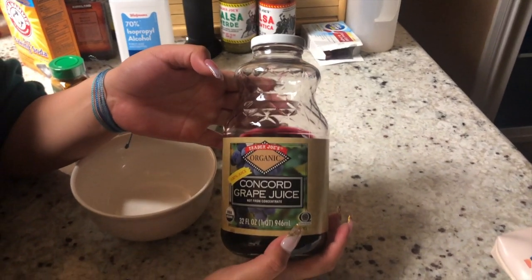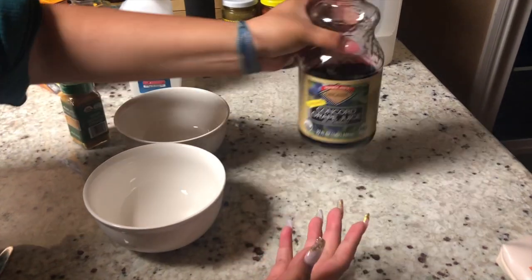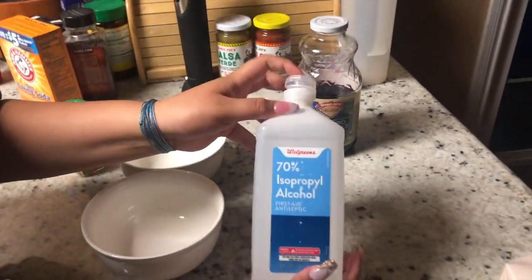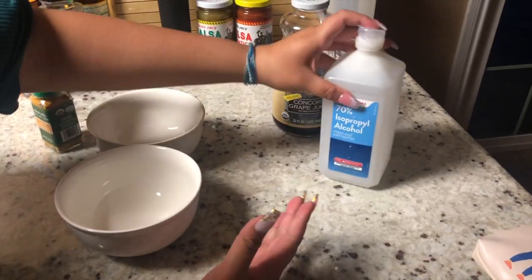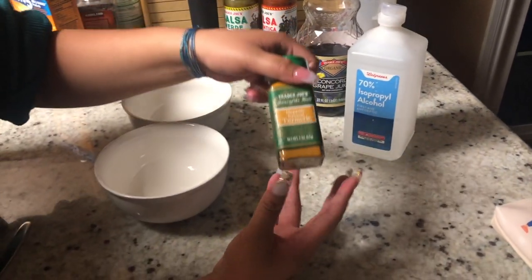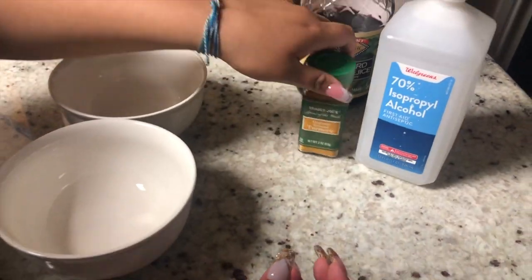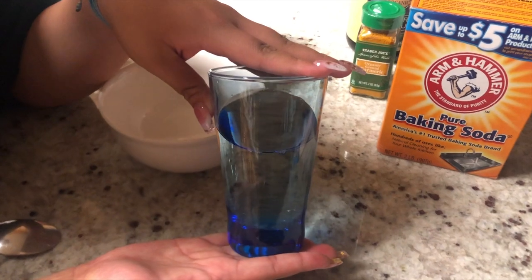To start off this experiment we are going to use Concord grape juice or just any grape juice in general, some alcohol this one we are using 70%, and some powdered turmeric. We will also be using baking soda and a bit of water.